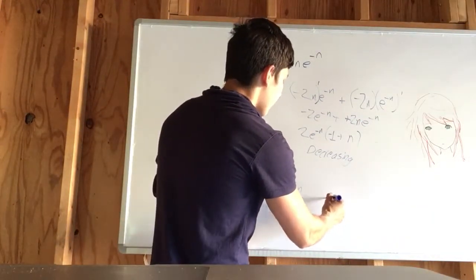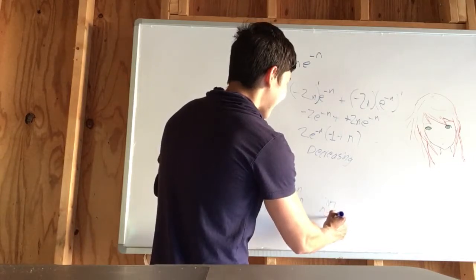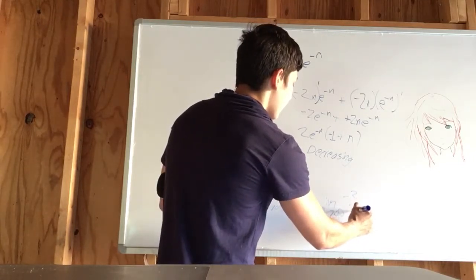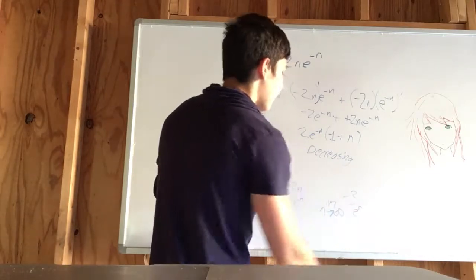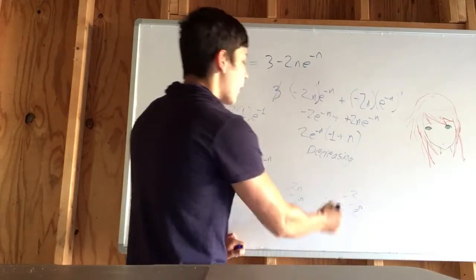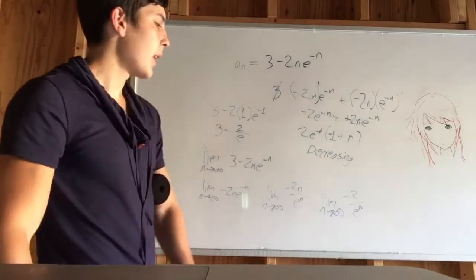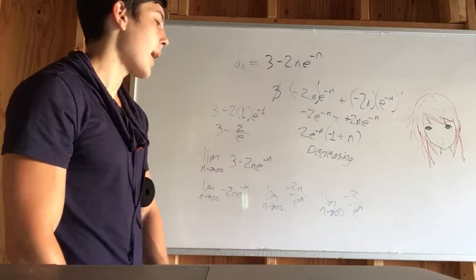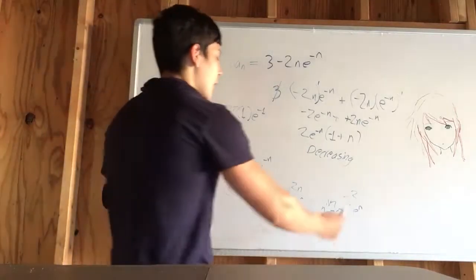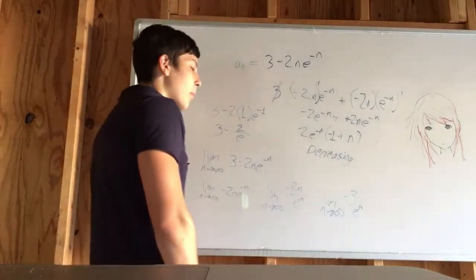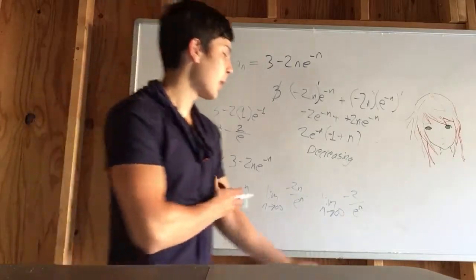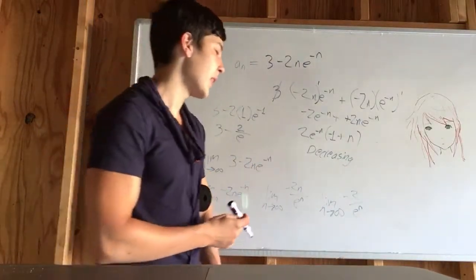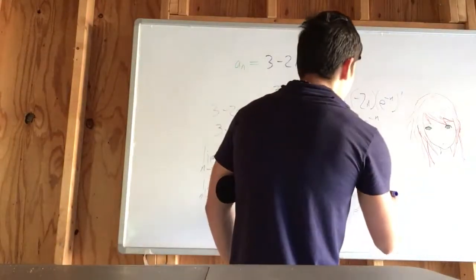So let's take that derivative and we have negative 2 over e to the n. Now we plug in infinity and what happens? That goes to 0. That absolutely goes to 0 because you're dividing some number by infinity. You plug in infinity in the exponent of e and that goes to infinity. So we have converges to 0.